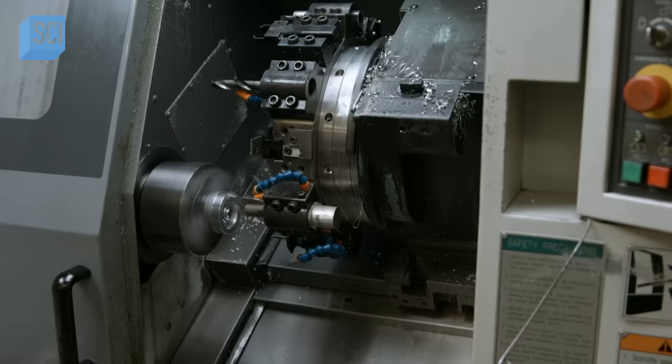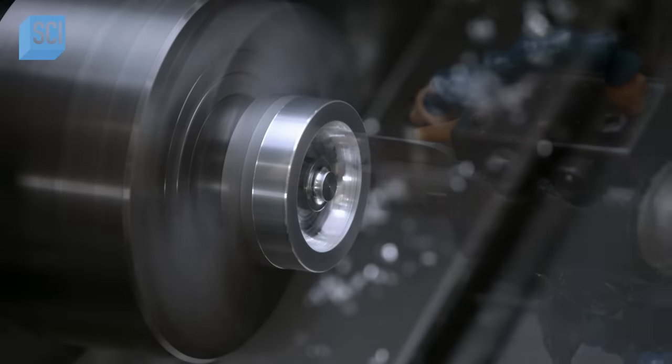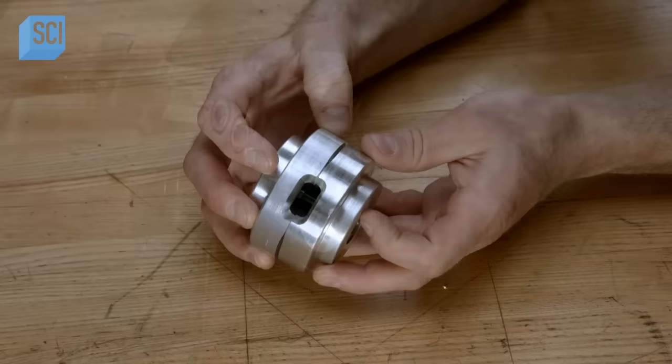Next, the other half of the mold takes shape as the computerized tooling sculpts another puck to a profile that fits to the first one perfectly.